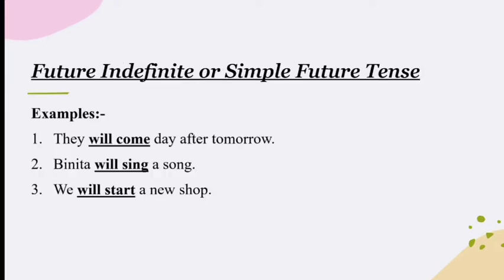Let us see some examples of Future Indefinite Tense. Example 1: They will come day after tomorrow. Example 2: Binita will sing a song. Example 3: We will start a new shop. The underlined words — 'will come', 'will sing', 'will start' — are referring to activities or events that have not happened yet, but are likely to happen sometime in the near future.